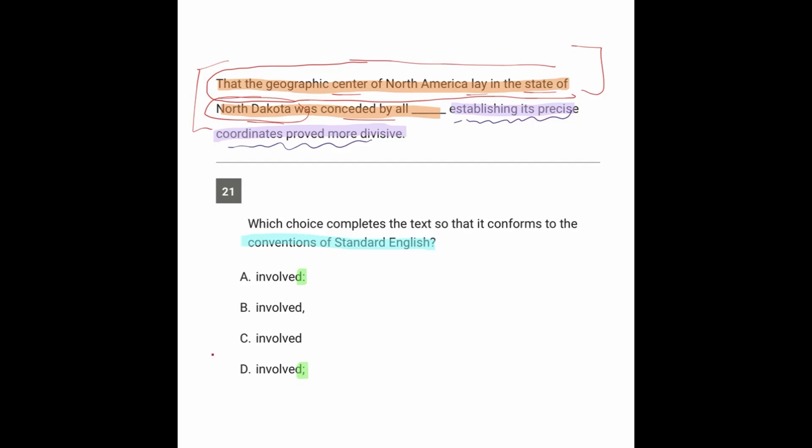So a little more complicated. But yes, that is an independent clause in orange. And we have an independent clause in the second part, establishing the coordinates proved, that's our verb right there. This thing proved, that's our subject verb combination, more divisive. So two independent clauses separated by a semicolon, and the answer here is D.